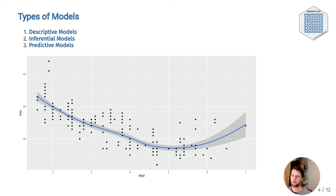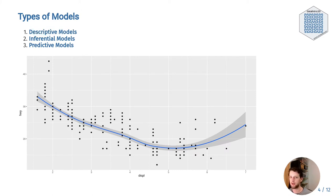The tidymodels book, which I recommend and will link to in the script, names three types of models where any particular model can fall into multiple categories at once. A descriptive model is purely used to describe the underlying data and make patterns easier to see. When we add a smoothing line to a ggplot with geom_smooth(), the default method is a Loess curve — locally estimated scatterplot smoothing. It reveals patterns but by itself cannot be used for predictions.